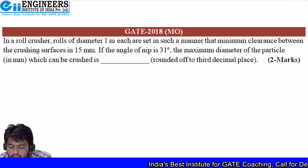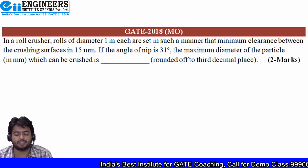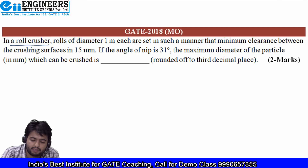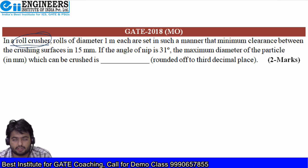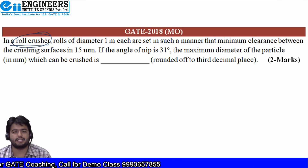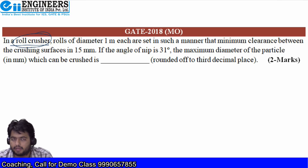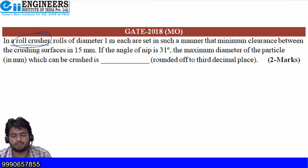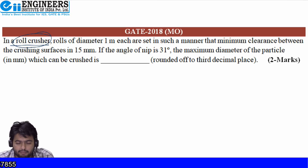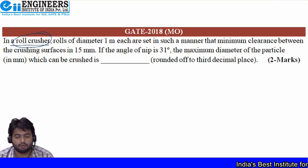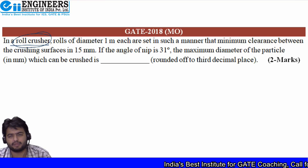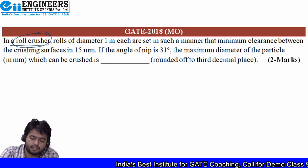Moving on to the next question — this is a mechanical operations question. In this question we have a roll crusher. A roll crusher is a size reduction equipment which utilizes the rolling action of rolls to reduce the size of materials, usually solids such as rocks. We use crushers to reduce the size of rocks to smaller pieces.